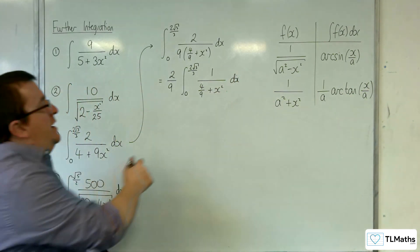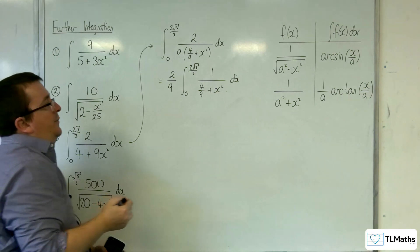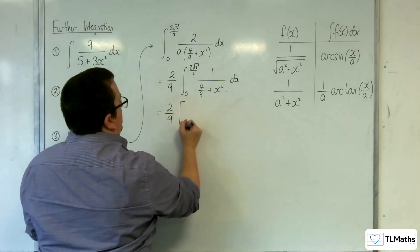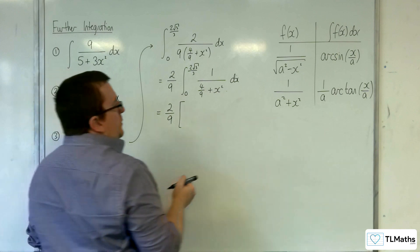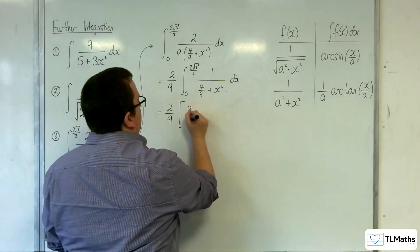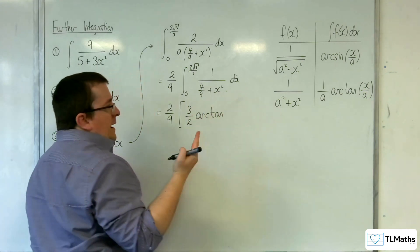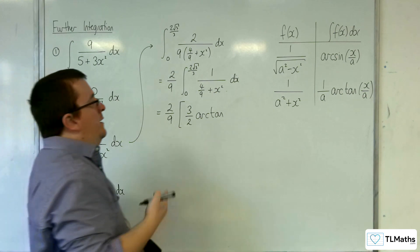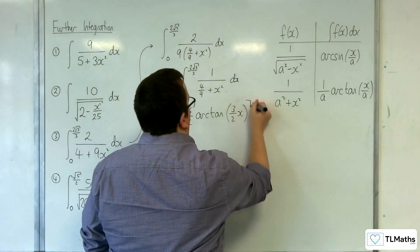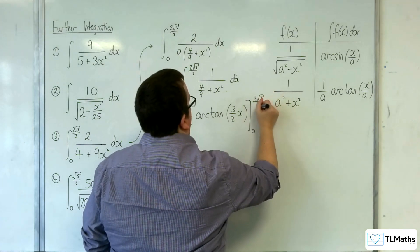This is now in the correct form. A here is 2 thirds, the square root of 4 ninths. So we'll have 2 ninths times — 1 over a, so 1 over 2 thirds is 3 halves — arc tan of x over 2 thirds, so 3 halves x, evaluated between 0 and 2 root 3 over 3.